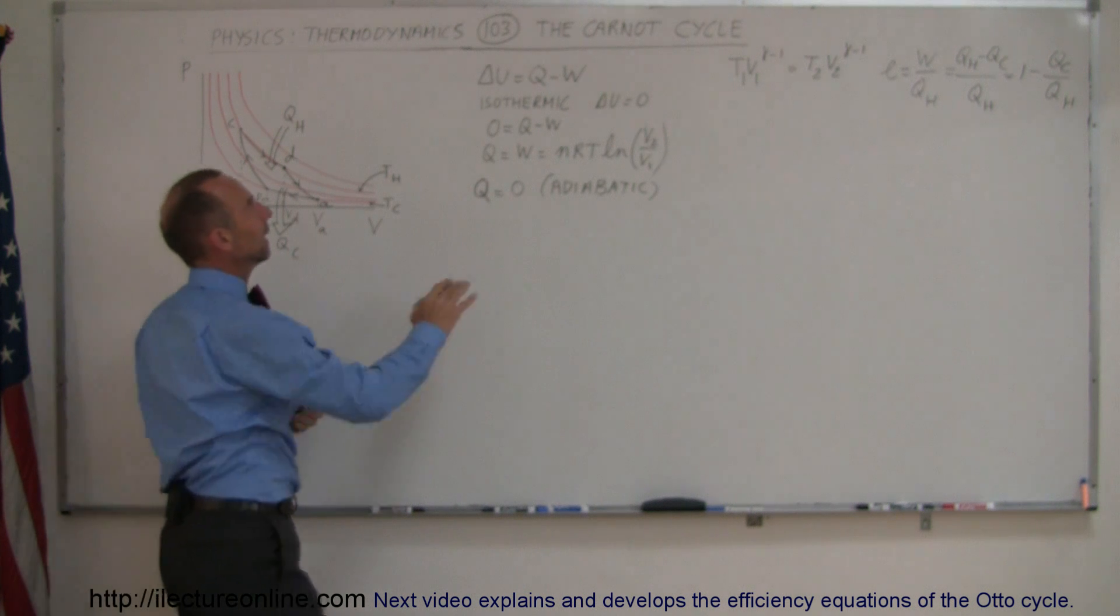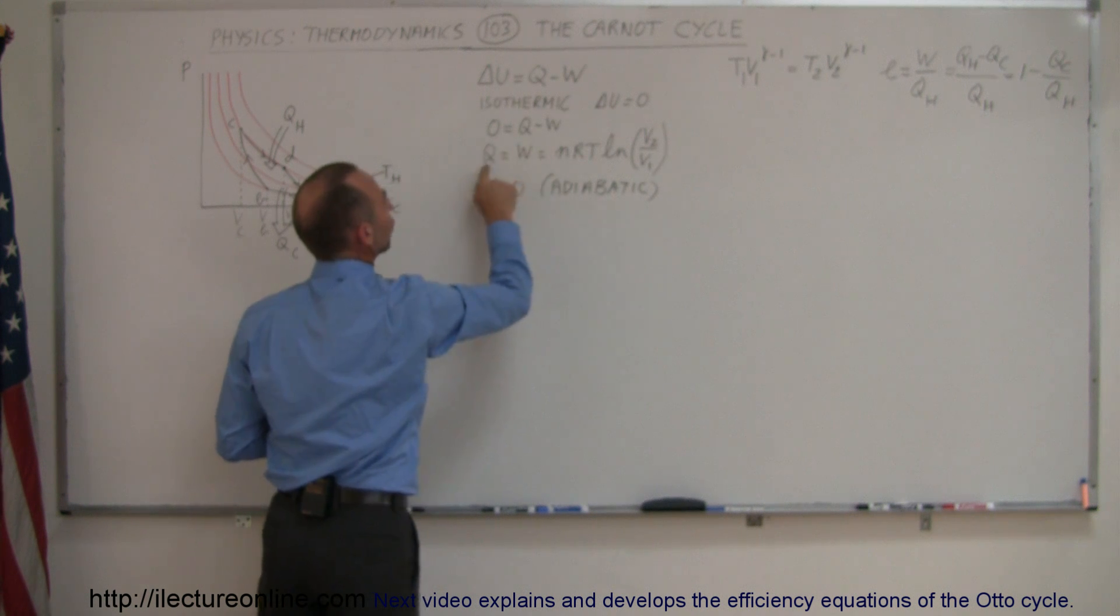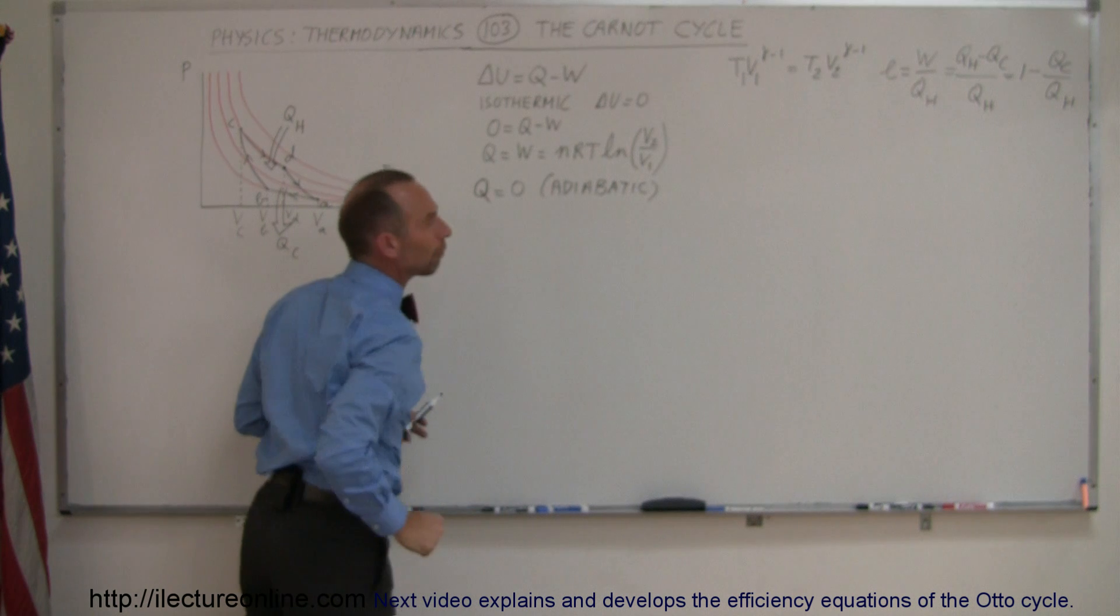Now, remember that in an isothermic process, based upon the first law of thermodynamics, delta U is zero, and therefore Q equals W, which is equal to nRT times the natural log of V_final over V_initial.